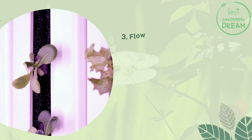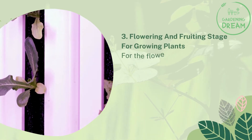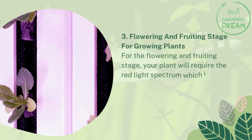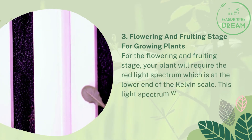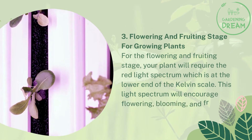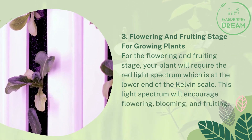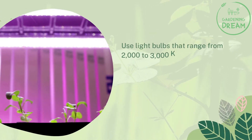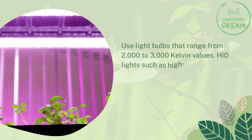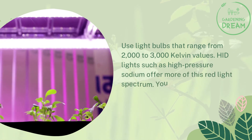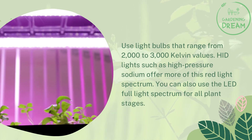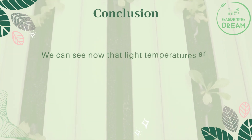Number three: flowering and fruiting stage. For the flowering and fruiting stage, your plant will require the red light spectrum, which is at the lower end of the Kelvin scale. This light spectrum will encourage flowering, blooming, and fruiting — use light bulbs that range from 2,000 to 3,000 Kelvin. HID lights such as high-pressure sodium offer more of this red light spectrum. You can also use the LED full light spectrum for all plant stages.